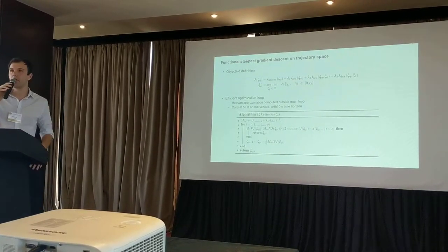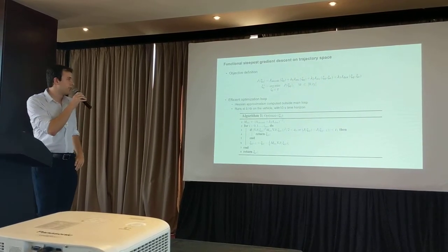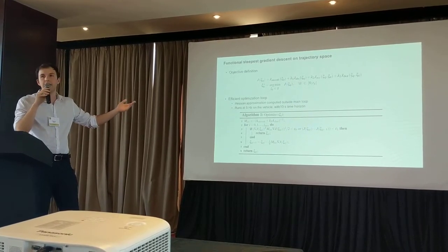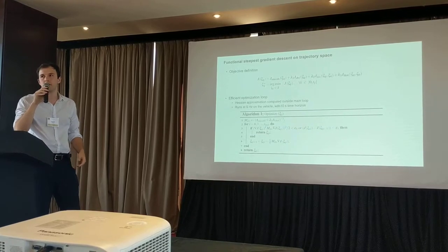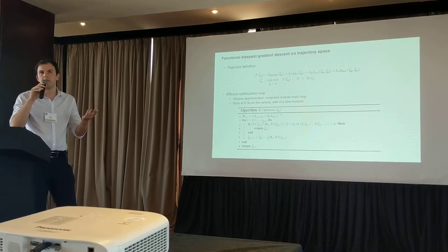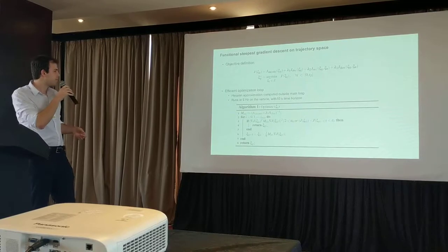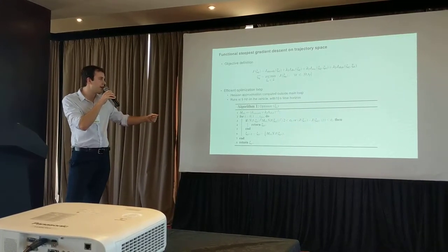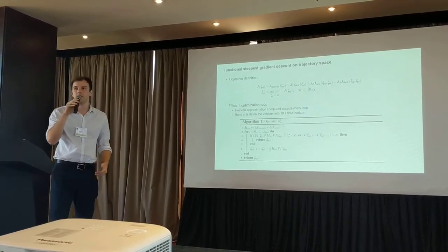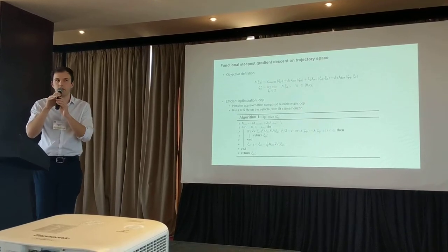Now that we've defined all four costs, we jump to the optimization loop. We compute, outside the main loop, an approximation of the Hessian for this cost function, using analytical derivatives for both the smoothness cost and the artistic intent cost. For a maximum of N iterations, we follow steepest descent to minimize the costs, ending up with a trajectory that minimizes all four objectives.